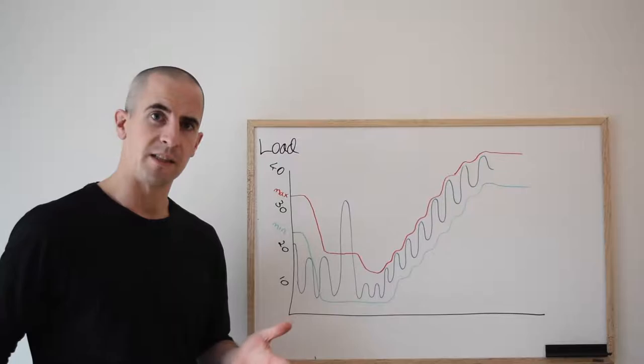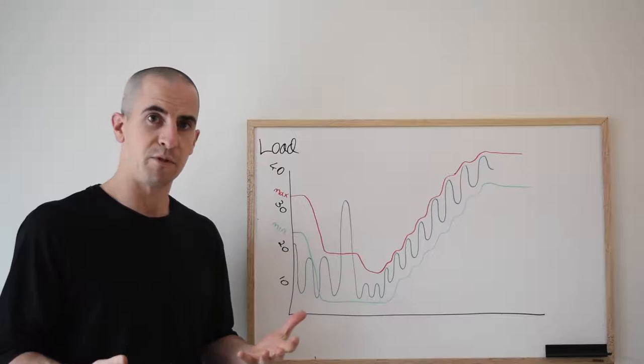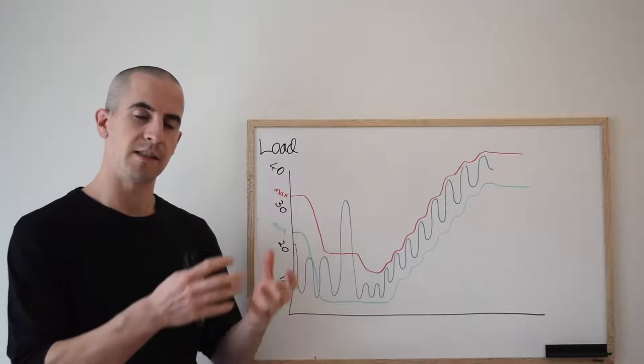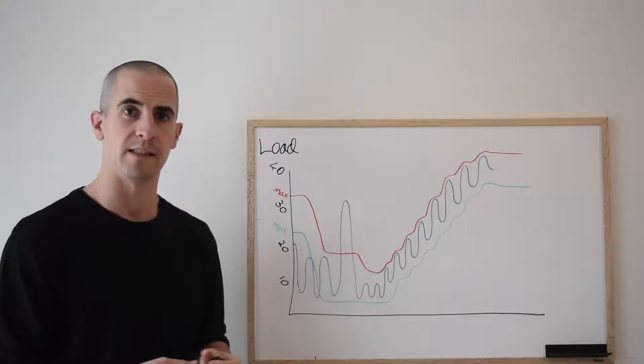Quadriceps tendon, hamstring tendons, gluteal tendons around the lateral hip. All of those things, any running injury you can pretty much think of - stress fractures, bones, tibial bone is a tissue. All of those tissues respond to load in exactly the same way. So if we can understand this concept in terms of the knee and the kneecap, we can understand it as it applies to any running injury.